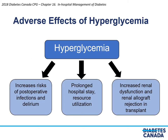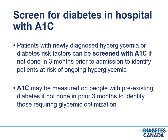Hyperglycemia has many adverse clinical effects. Data has shown hyperglycemia is associated with increases in the risks of post-operative infection and delirium, increased resource utilization, and in renal patients, increased risks of renal dysfunction and allograft rejection. As such, identification of people at risk of hyperglycemia is important in the hospitalized population. Patients with newly diagnosed hyperglycemia or diabetes risk factors can be screened with an A1C to identify patients at risk of ongoing hyperglycemia post-hospitalization. For patients with known pre-existing diabetes, an A1C may be measured to identify those who require glycemic optimization.